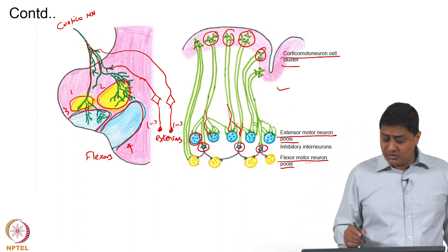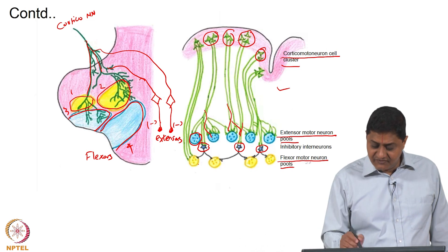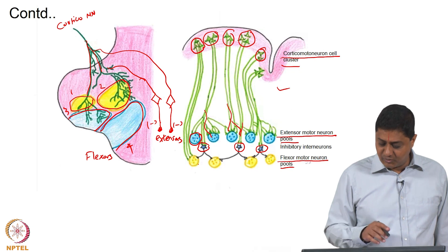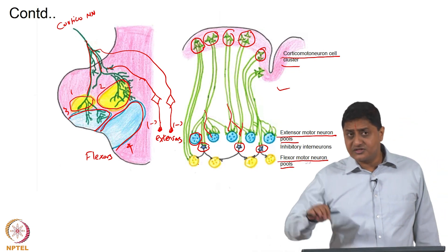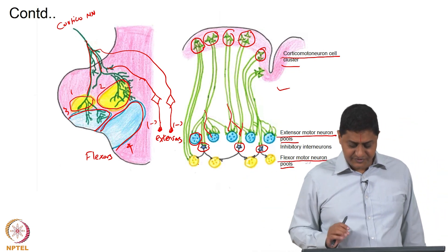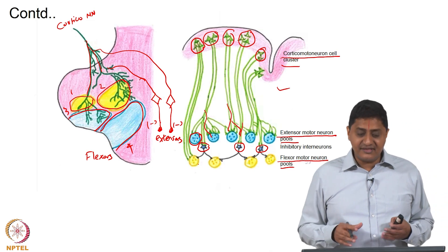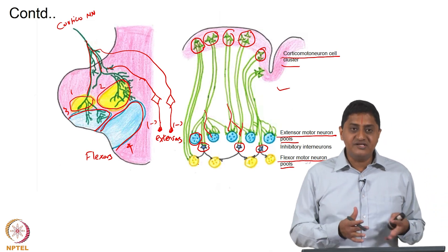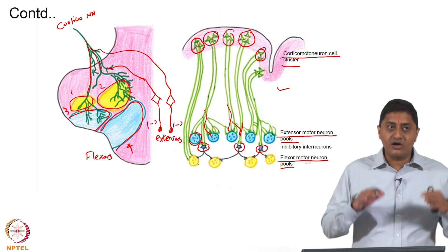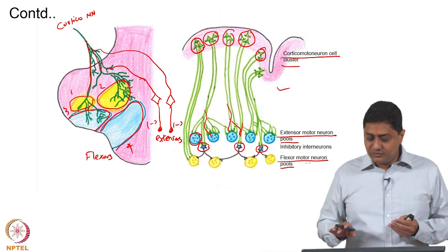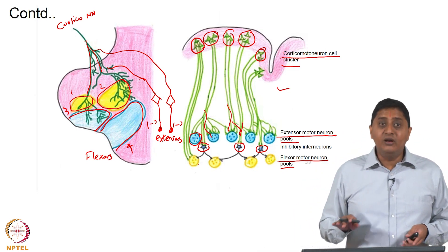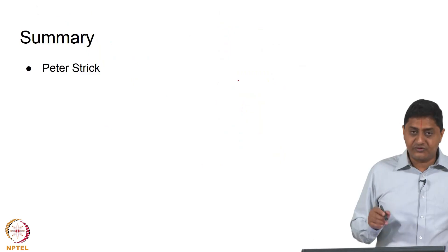What is not shown is that these flexors are also receiving inputs from different clusters of corticomotor neurons, and they are also inhibiting the extensors and so on. What we have learned is that there is both convergence and divergence from the corticomotor neuronal pools to the spinal motor neuronal pools.